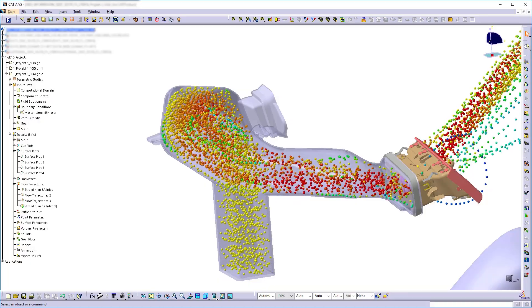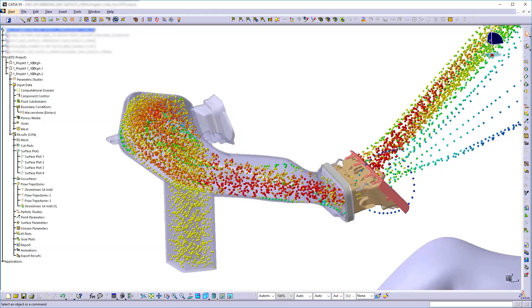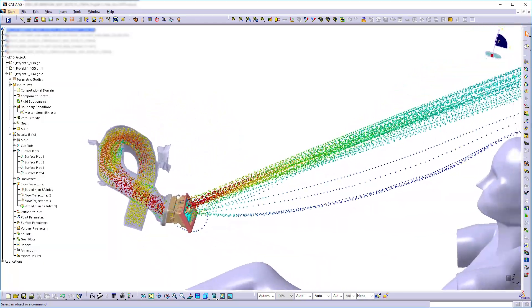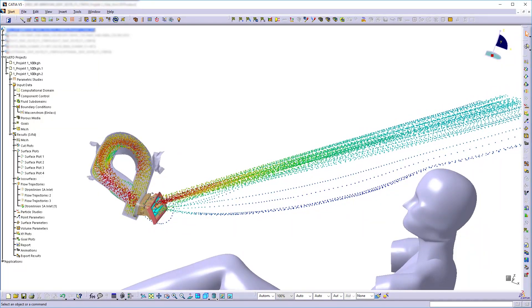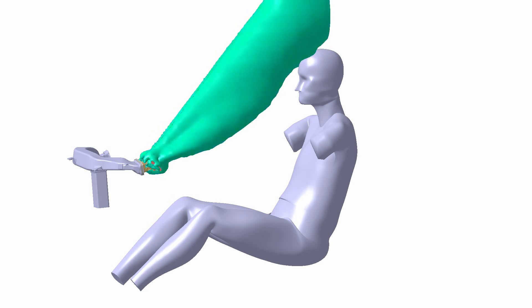Because Simcenter, especially Simcenter FloEFD, is pretty easy to use, we don't see any big deals when it comes to geometry preparation. They can have a better understanding of their products. They can turn it around in their 3D CAD software and see how their design influences the airflow, and that helps them to speed up the development process and get ideas about what part of geometry should be changed to get better results.